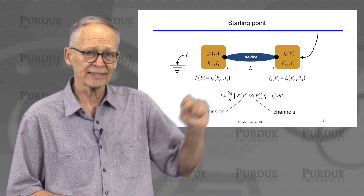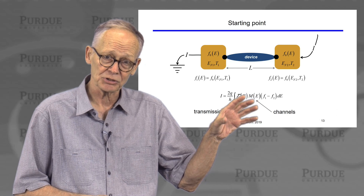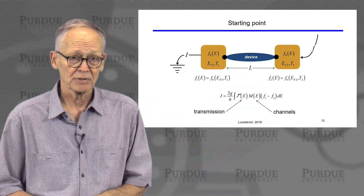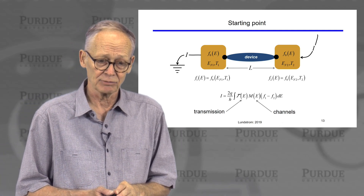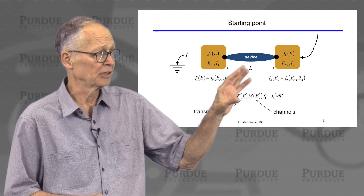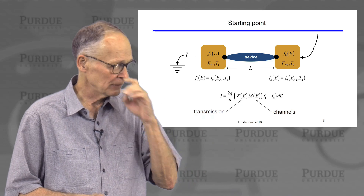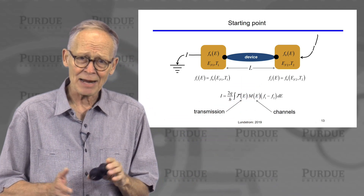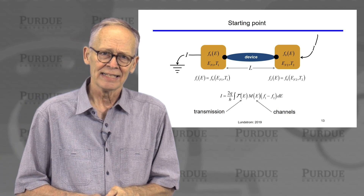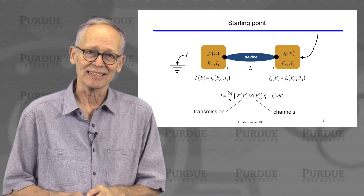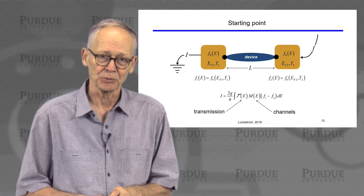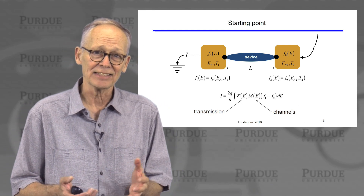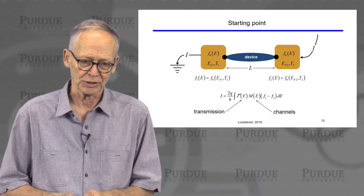Each of these two contacts is characterized by its own temperature and its own Fermi level. The Fermi level can be changed by applying a voltage. The electrical current through this device can be shown to be given by this expression — I'm not going to derive it, but it can be derived from the Boltzmann transport equation. I view this as a convenient way to solve the Boltzmann transport equation.